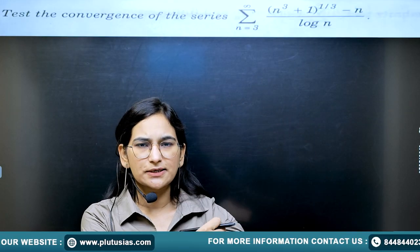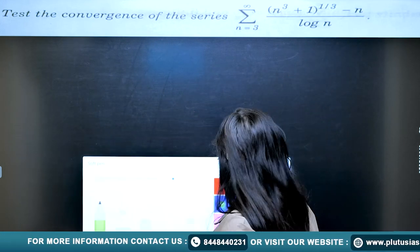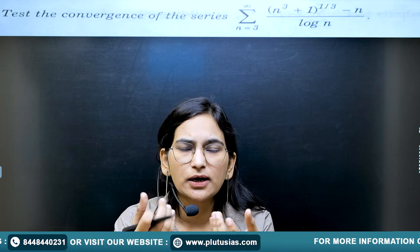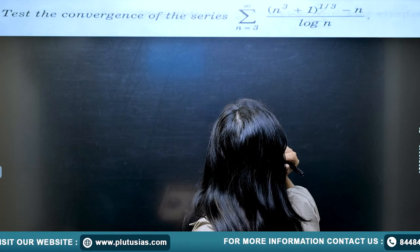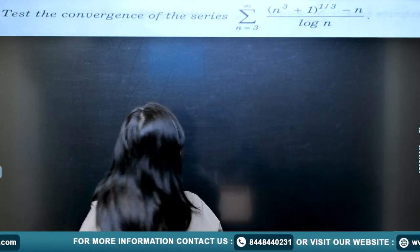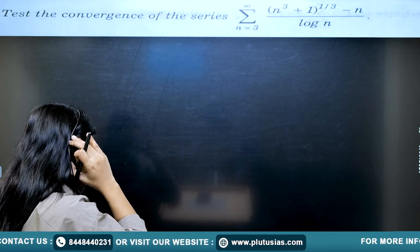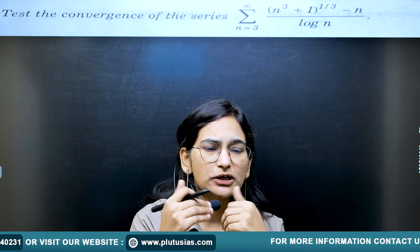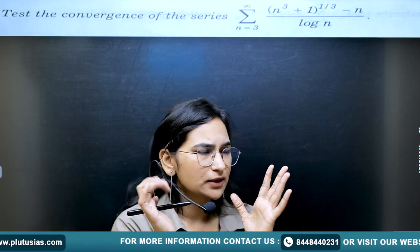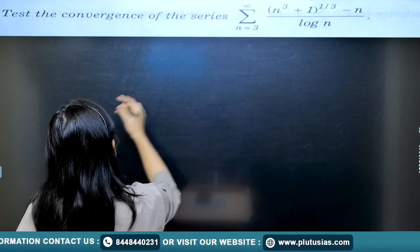Now we will see the application of both tests. The first question is about Abel's test. The given series is summation from n = 3 to infinity of (n³ + 1)^(1/3) minus n, all divided by log n. We need to identify which part is aₙ and which is bₙ. Whatever is decreasing should be bₙ — 1/log n can be shown as a decreasing sequence, so the remaining part becomes aₙ.